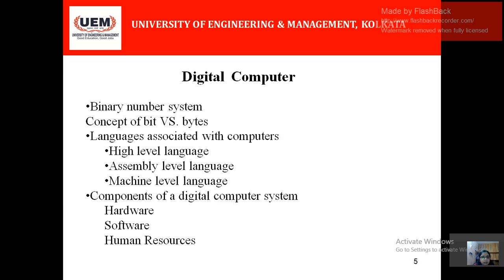There are basically three components of a computer: first is hardware, second is software, and third is human resource. Hardware means you have the memory, you have the CPU — which is constituted by the ALU, control unit, registers, and cache memories — and you have the other input/output peripherals. Software is nothing but a collection of programs capable of doing a particular task, or a collection of instructions.